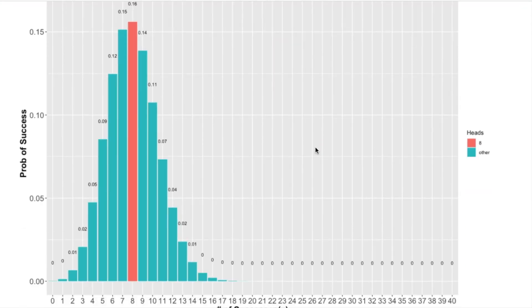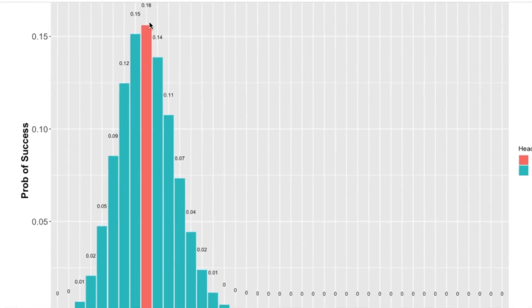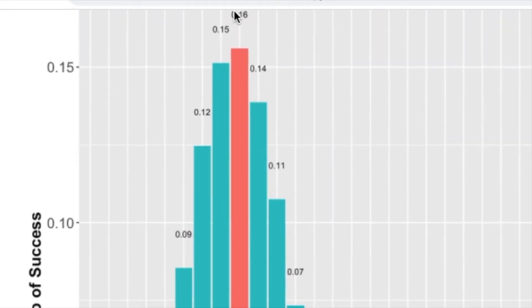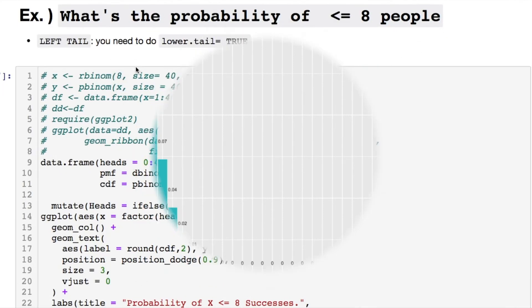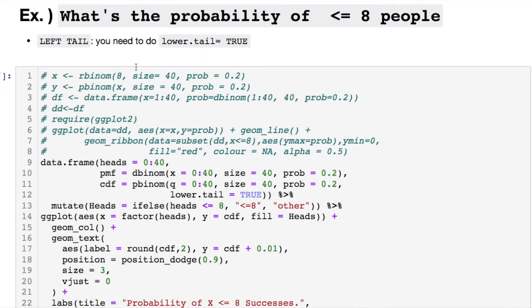But here we go. Out of 40 people we wanted exactly 8 people. We have a 16 percent chance that they like coffee, given that the trial had 40 people and we knew that there was a 20 percent chance that they would like coffee.